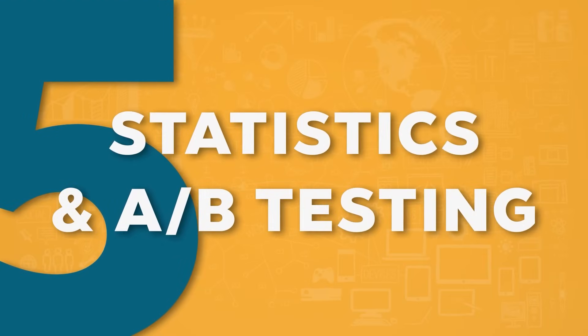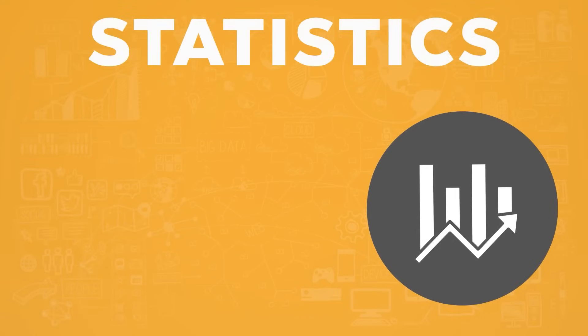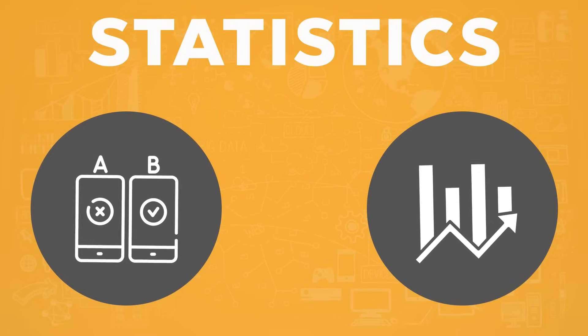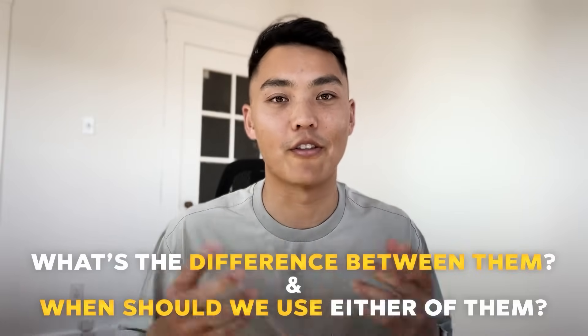The last question type we see in data analyst interviews is around statistics and A/B testing. The baseline of a lot of data analytics work is fundamentally based in stats. Specifically, there's the causal inference part of statistics, and then there's the A/B testing part, which is more about experimentation. For entry-level data analyst interviews, the company might ask: what are Z-tests and T-tests, and what's the difference between them?